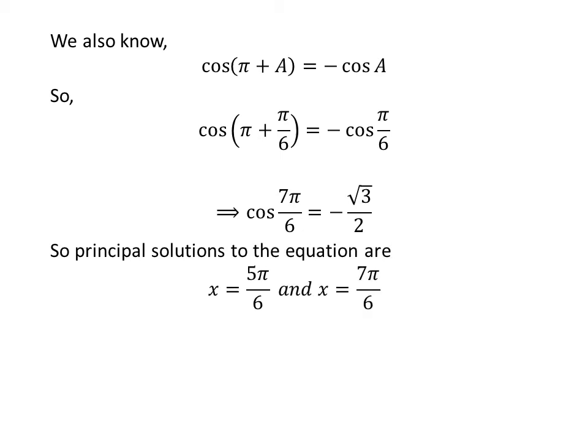So, the principal solutions to the equation cosine of x is equal to minus square root of 3 upon 2 are 5 times pi upon 6 and 7 times pi upon 6.